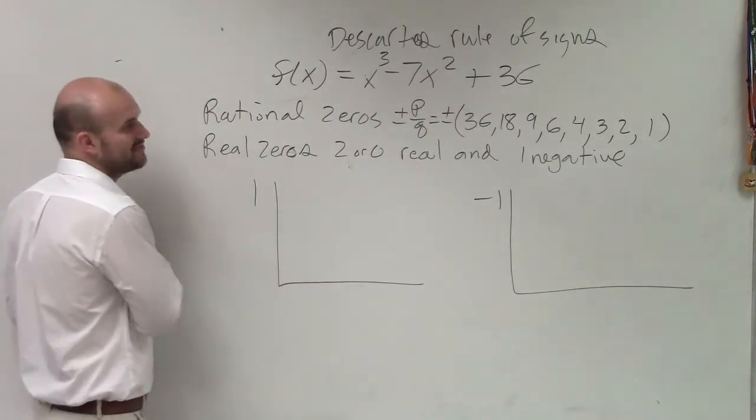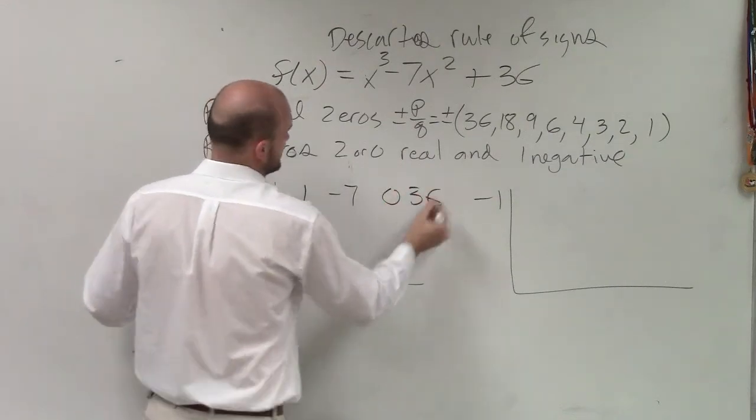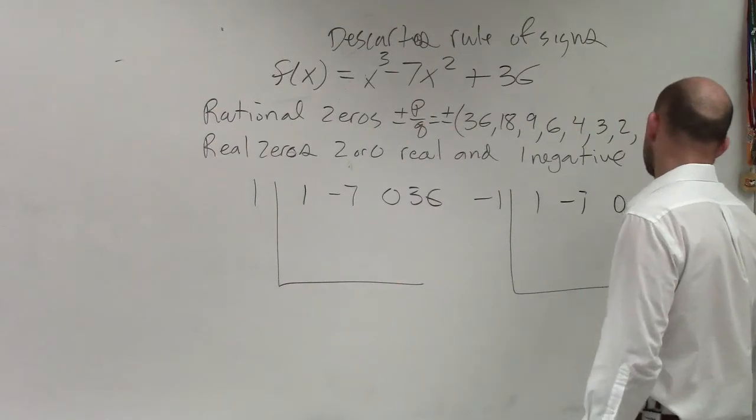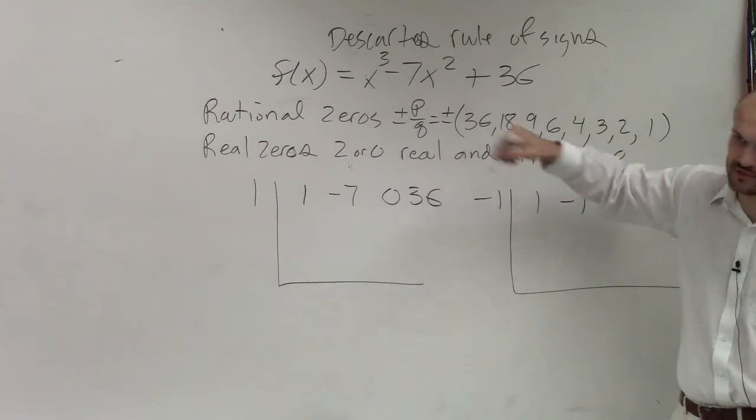So let's do synthetic division. 1, negative 7, don't forget the 0, 36. 1, negative 7, don't forget the 0, 36. Remember, the 0 represents the linear term. A lot of students will forget that.